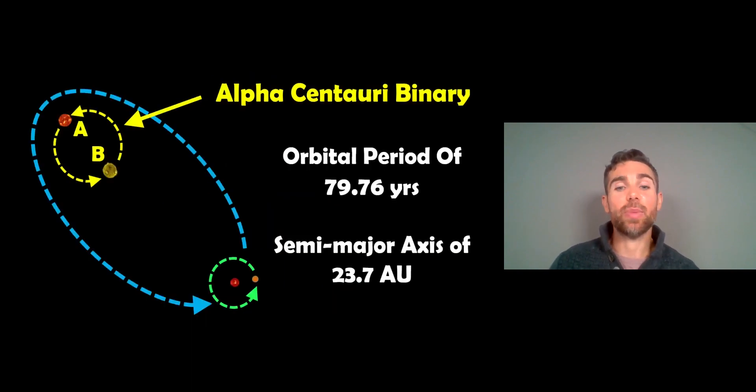So the actual system itself. Now the main part, Alpha Centauri, is a binary system of A and B, and they orbit a common centre of mass between the two stars. And that has an orbital period of just less than 80 years. So about 79.76 years, it takes those two stars to orbit one another, or orbit their common centre of mass.